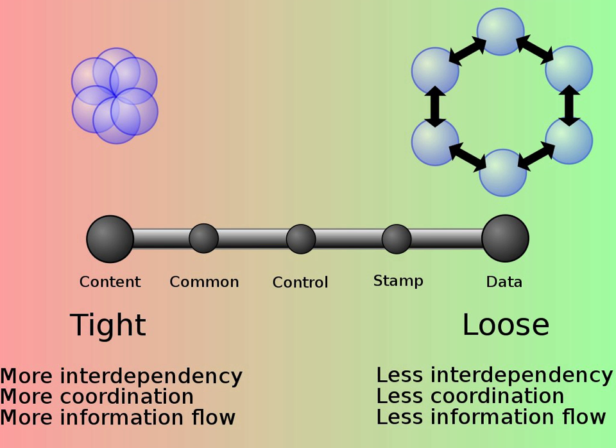Control coupling is one module controlling the flow of another by passing it information on what to do, for example, passing a what-to-do flag.